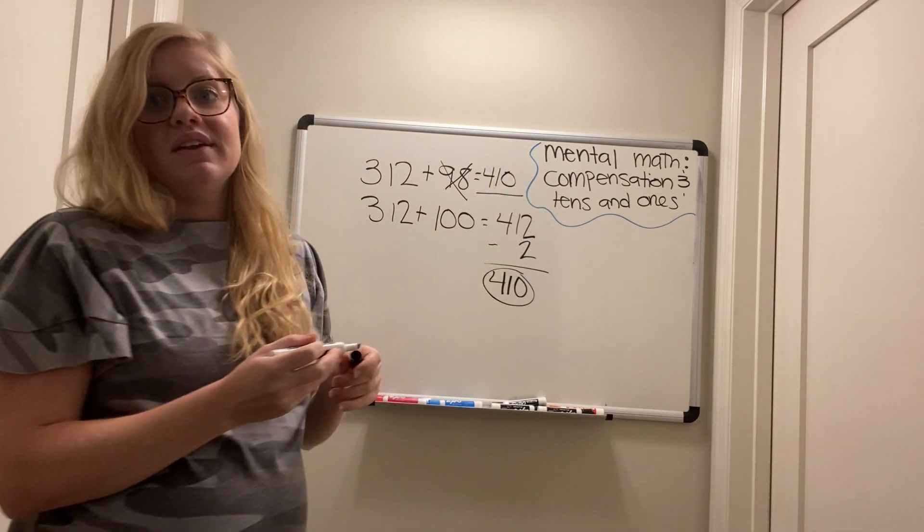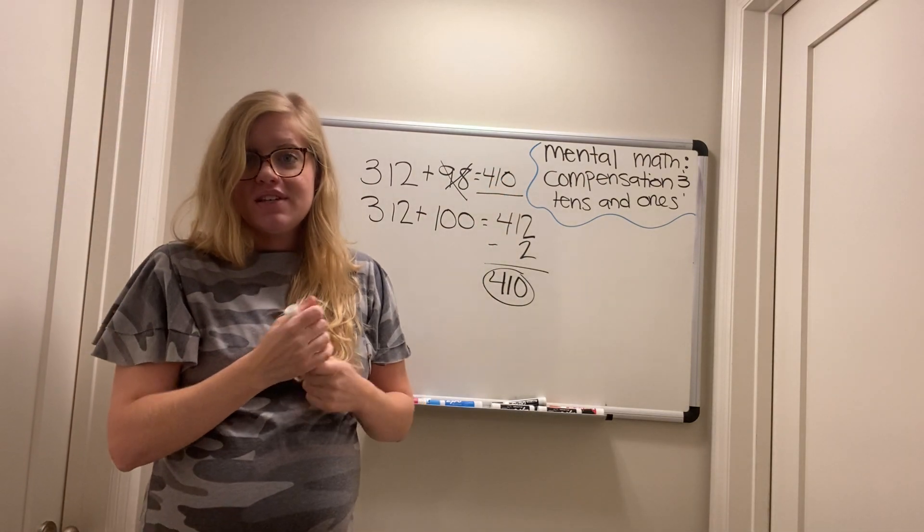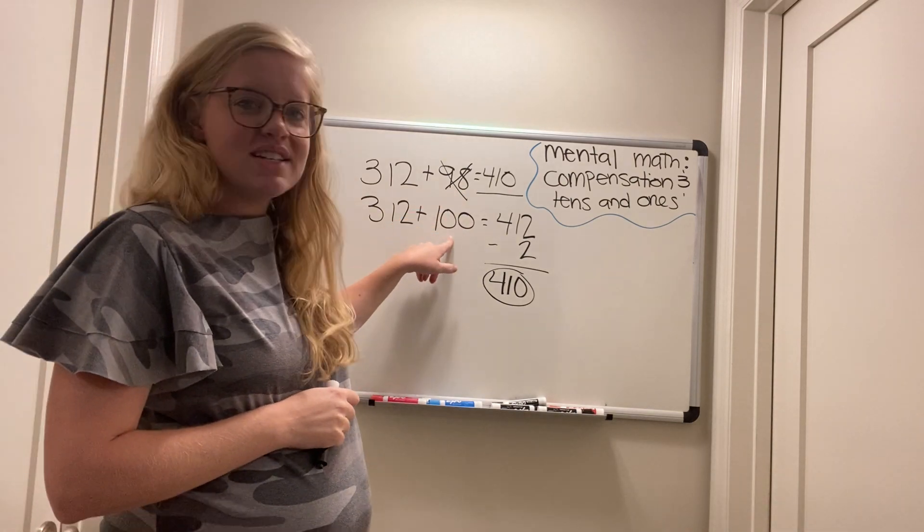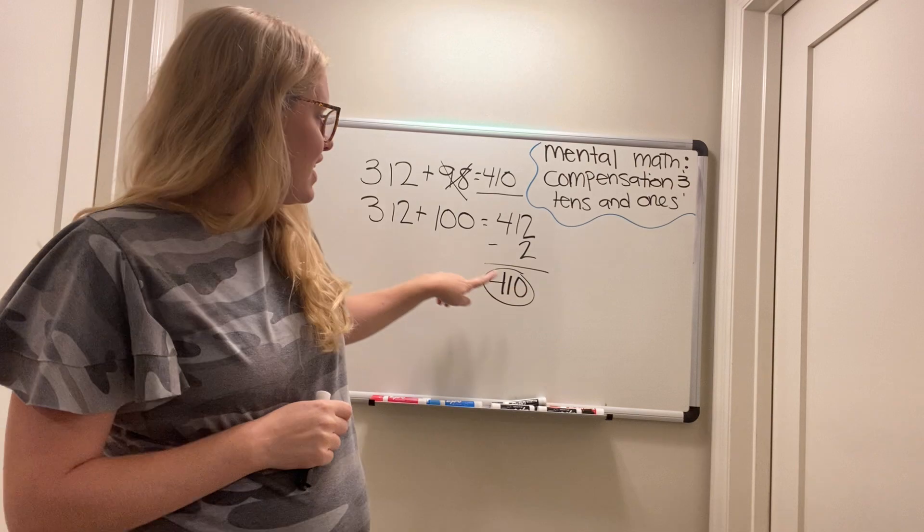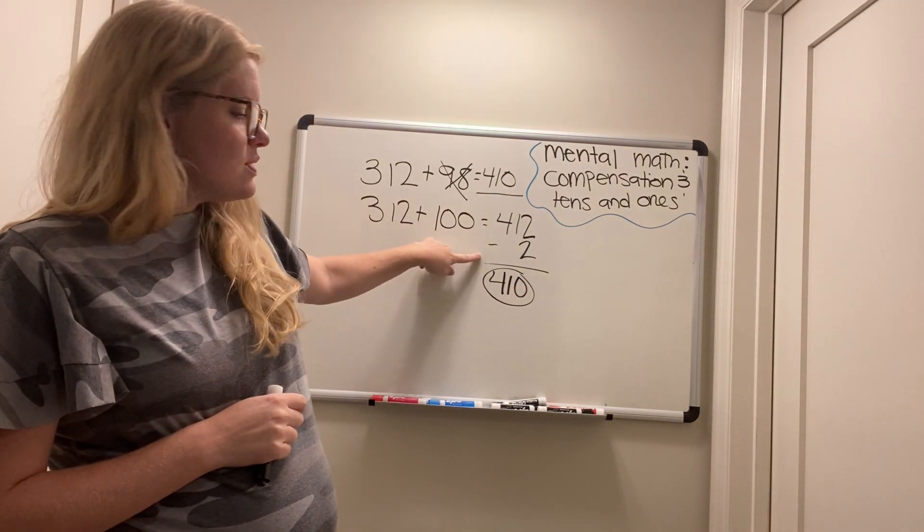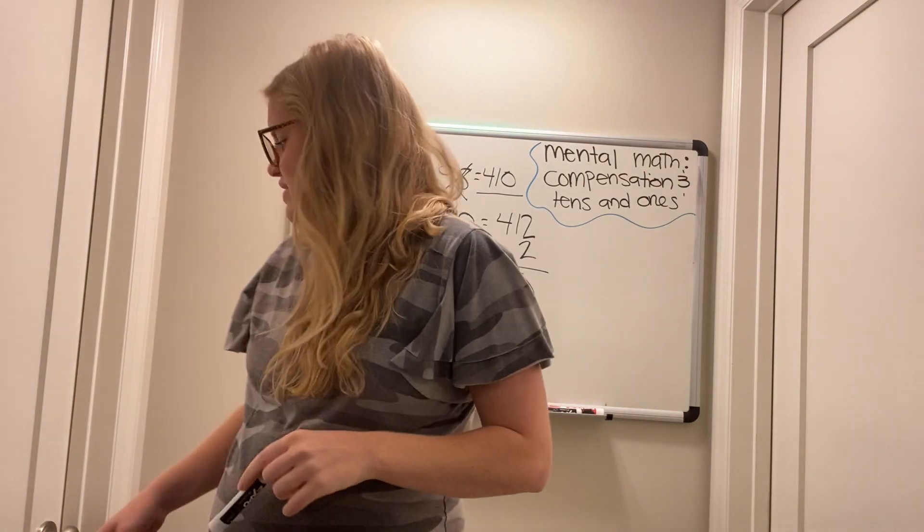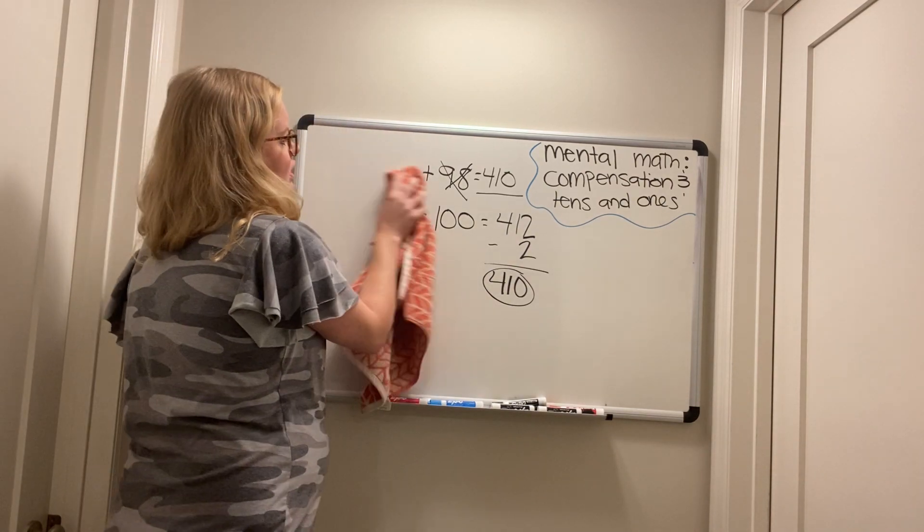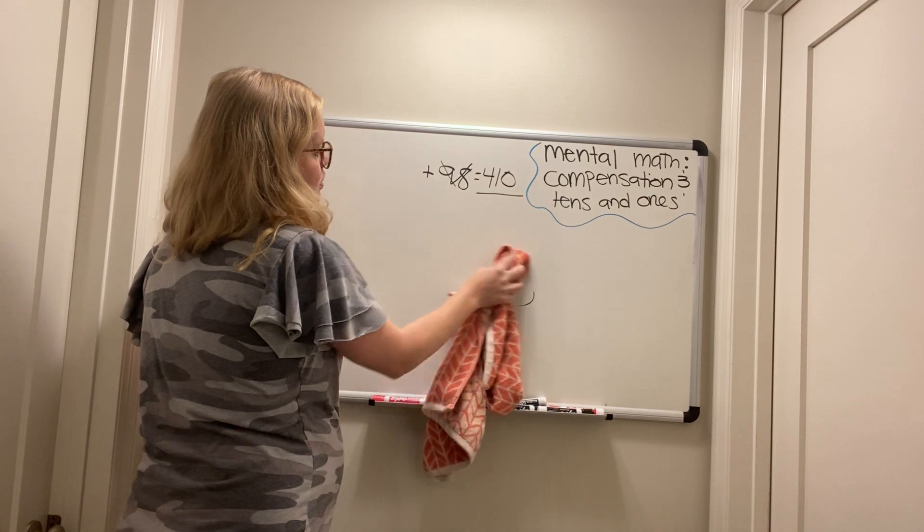So what's happening, and the reason that we call this compensation, is because we're changing the number that we don't like to something that's easy to add, and then we're compensating at the end. So this minus 2 is the compensating number. Let's try one more together, then I'm going to have you try it on your own.